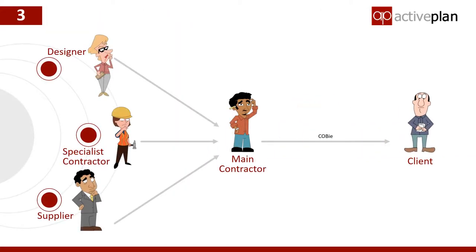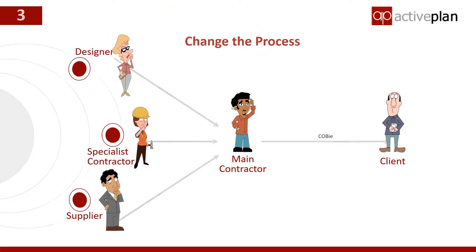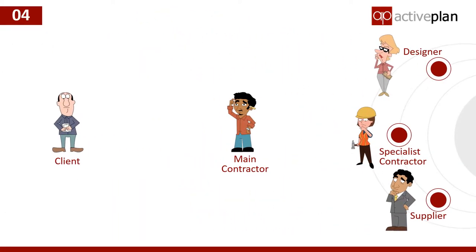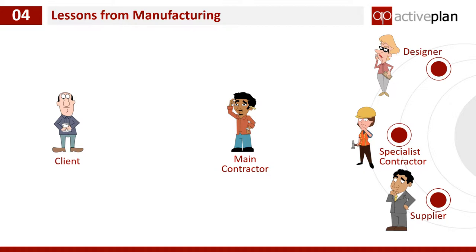Clearly there's only one way to sort this out — the current process has got to change. So what can we learn from other industries? Let's look at manufacturing. In manufacturing, clients tell the supply chain what they have to deliver and then reject anything that doesn't meet those requirements. Everyone knows where they stand, what they need to deliver, and quality improves too. They've learned a very simple message.